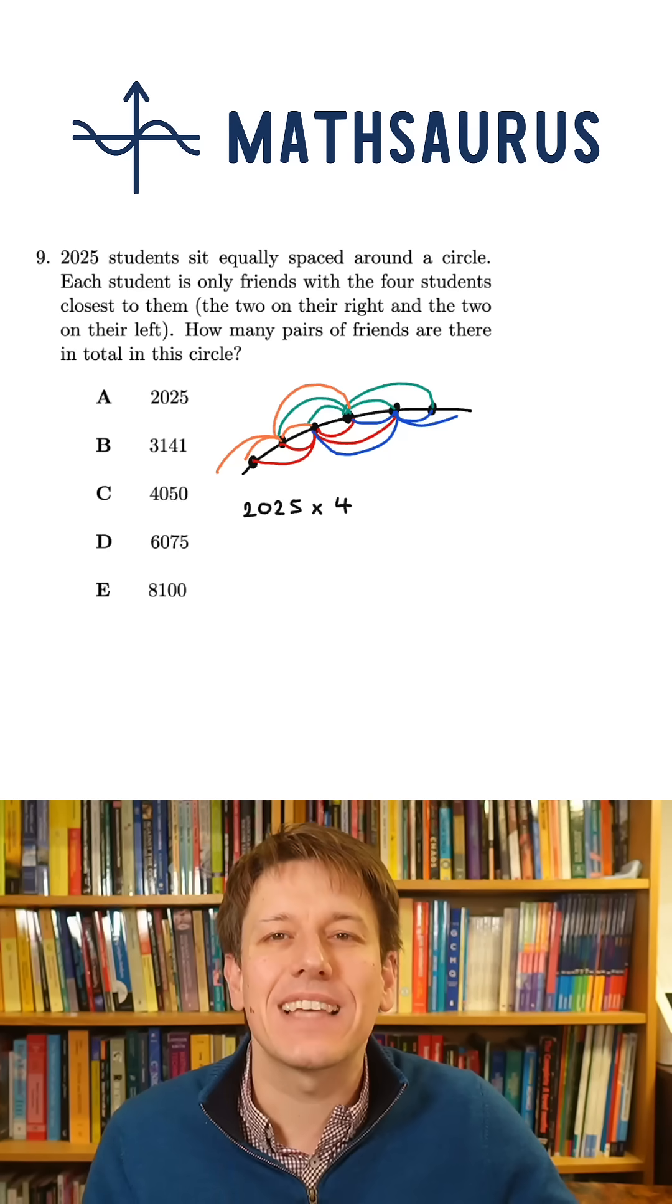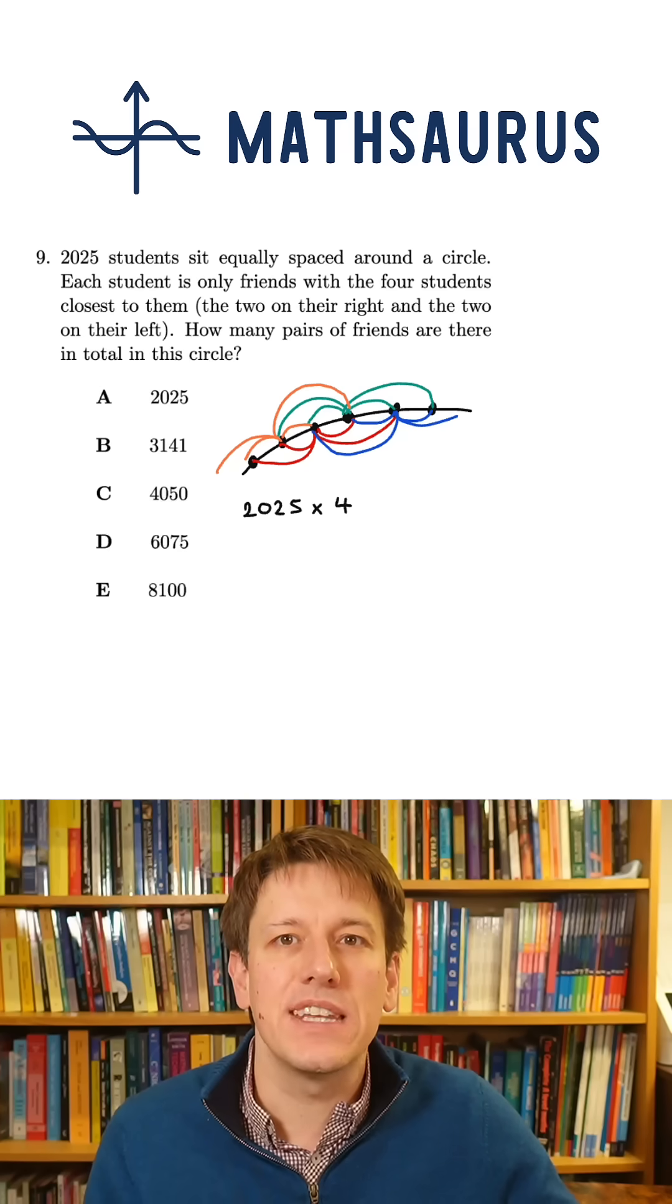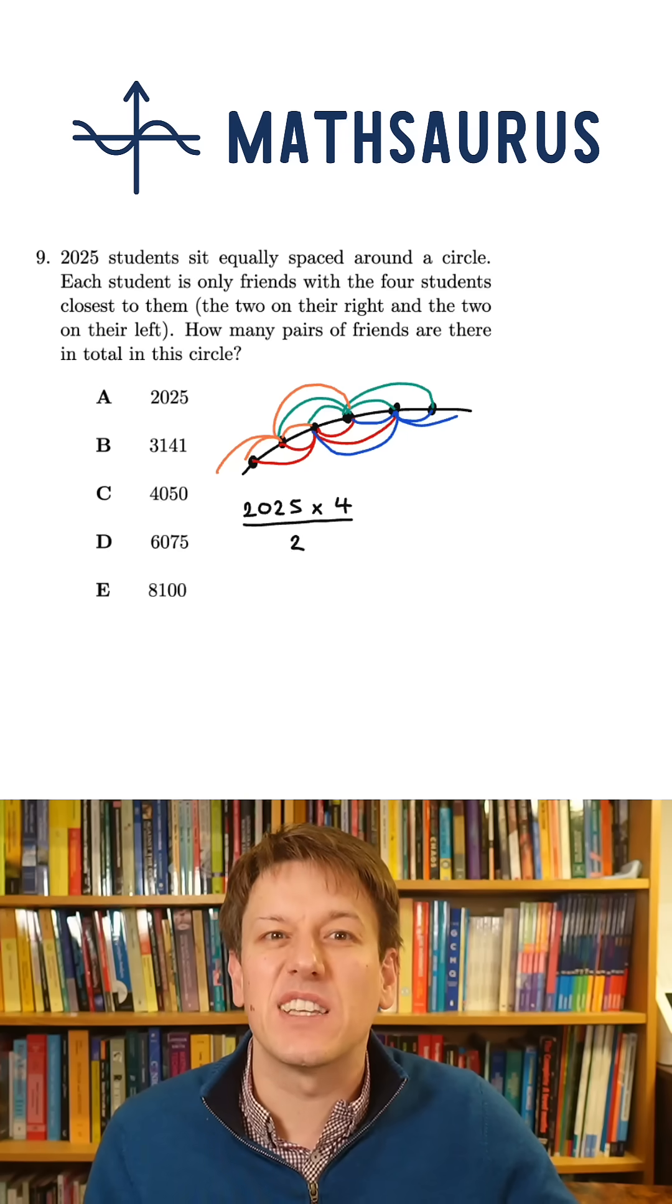So if I take this approach, I'm going to have drawn exactly double the number of lines that I need to represent the friendships, so I need to divide that by two.